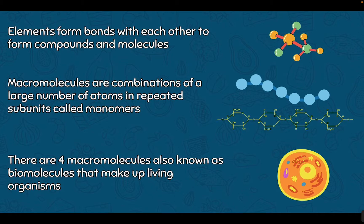There are four macromolecules, also known as biomolecules, that make up living organisms. Bio meaning life, these are the four major molecules that make up life. We're going to go through each one, talk about their monomers, what elements they have, their main function, and give examples of where we find them in living organisms.